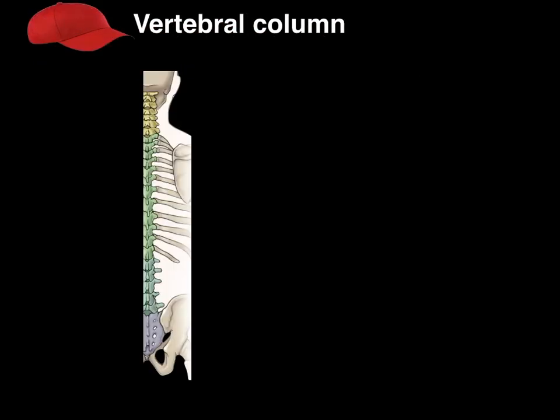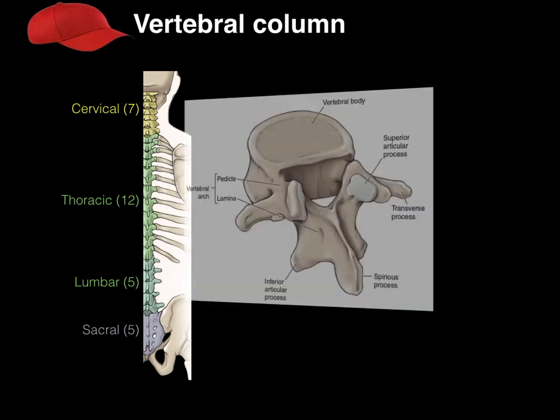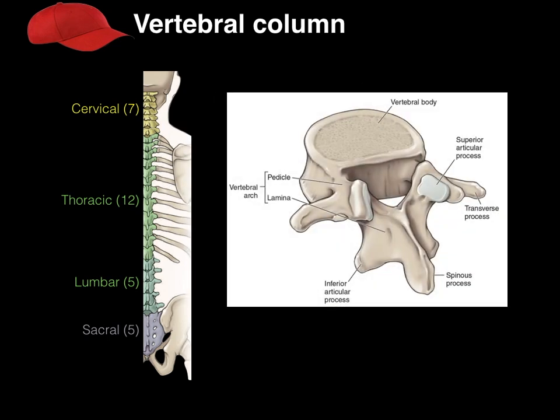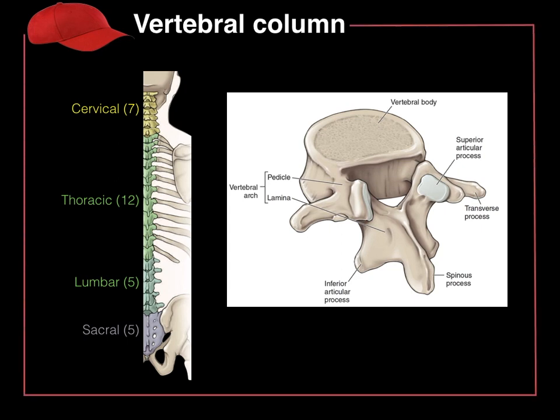To recap: the vertebral column is a group of segmentally organized vertebrae — seven cervical, 12 thoracic, five lumbar, and five fused sacral vertebrae — with bony landmarks as labeled. That is a recap of the vertebral column and vertebral canal.